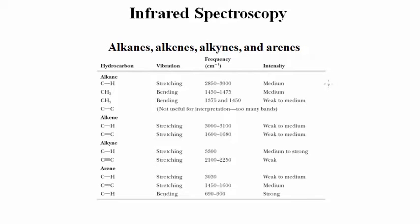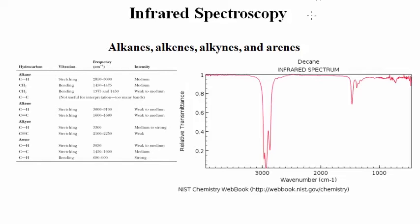For alkanes, the infrared spectra are typically very simple with only a few peaks. This correlation table covers alkanes, alkenes, alkynes, and arenes — showing typical vibrational modes, the frequency range at which they're observed in an IR spectrum, and intensity (weak, medium, or strong). As an example, the IR spectrum of decane shows a strong peak with multiple splitting between 2,850 and 3,000 wave numbers, which is characteristic of alkane CH stretching.